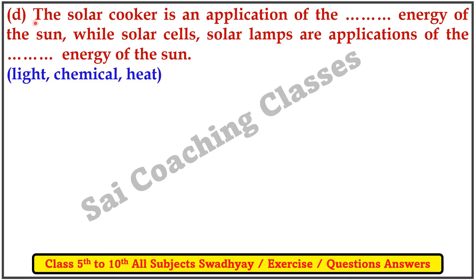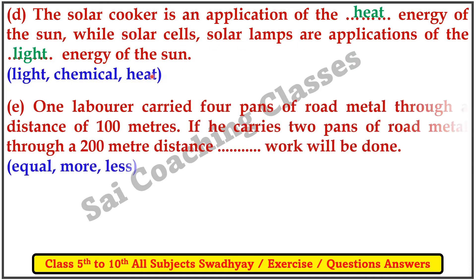The solar cooker is an application of heat energy of the sun, while solar cell and solar lamps are applications of the light energy of the sun.